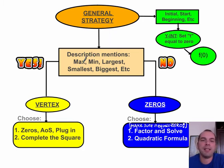However, if I'm asked about max, min, largest, smallest, biggest, then they ask me about the vertex. So, how do I find the vertex? Two ways. First way is like zeros, axis of symmetry, plugging back in like we did in chapter 2. Or completing the square that we just found out how to do in chapter 3.